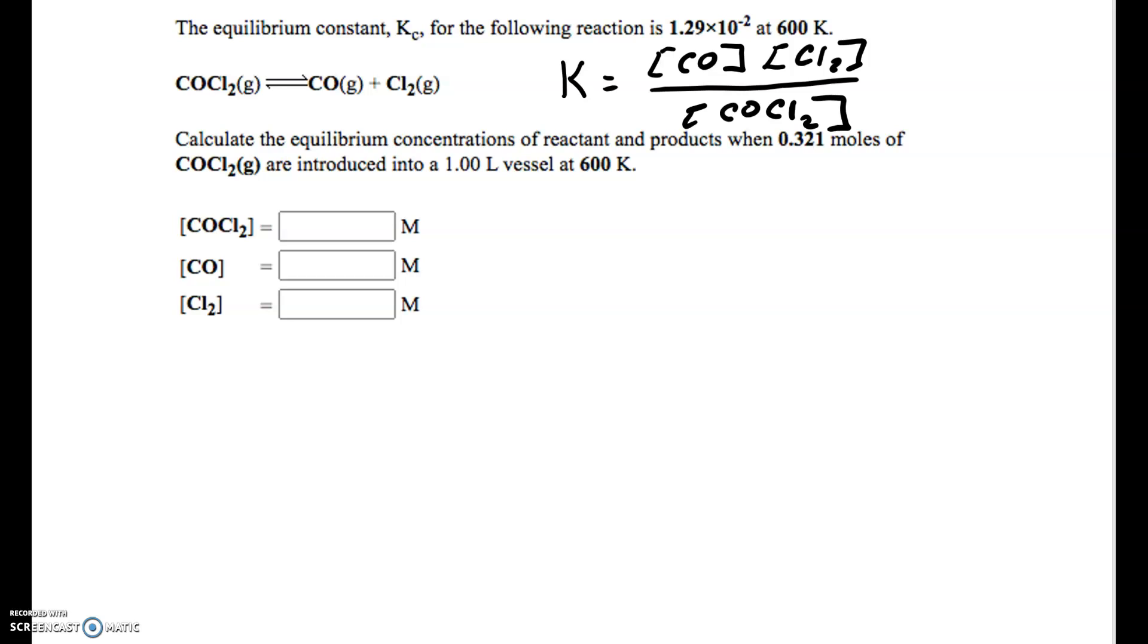And they gave us a K value. And I can just kind of scaffold this up right away. I can say my K equals my equilibrium concentration of CO times the equilibrium concentration of the Cl2 over the equilibrium concentration of the COCl2. So it's really important. These are equilibrium concentrations that go into this expression. And we have this value, this 1.29 times 10 to the negative 2. K is less than 1, and that is going to be reactant favored.